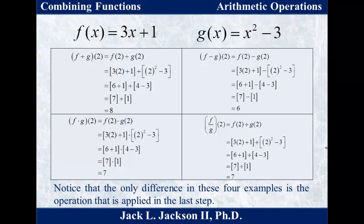Similarly, f minus g of 2: we again find f of 2 and g of 2, which are 7 and 1, but this time we subtract, giving 7 minus 1 equals 6. For f times g of 2, we find the same 7 and 1 and multiply to get 7. For f divided by g of 2, it's f of 2 divided by g of 2, so 7 divided by 1 is 7.